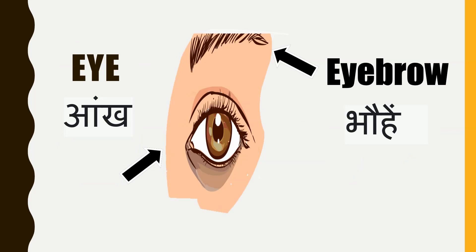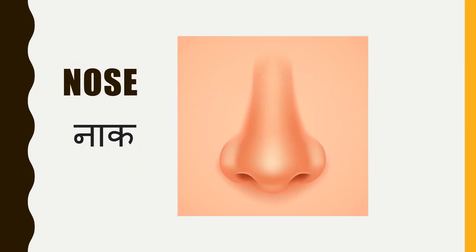Eye, and in Hindi, they are called aank. And the other one — hair above the eye — they are called eyebrow, and in Hindi, they are called bhohen. Then nose, and in Hindi, it is called naak.